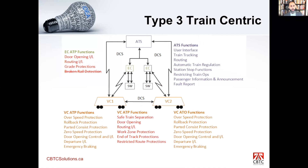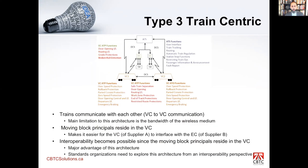In the train-centric architecture, all the moving block logic that previously resided in the wayside now resides entirely within the vehicle controller. The ATS simply monitors all trains, communicates with them, and gives them routes, but the vehicle controller decides safe separation between trains, when to request switch positions, when to open platform doors, and so on. The Element Controller is a simplified box that only acts on commands from the VC — turning a switch or opening platform doors — with no moving block logic of its own.